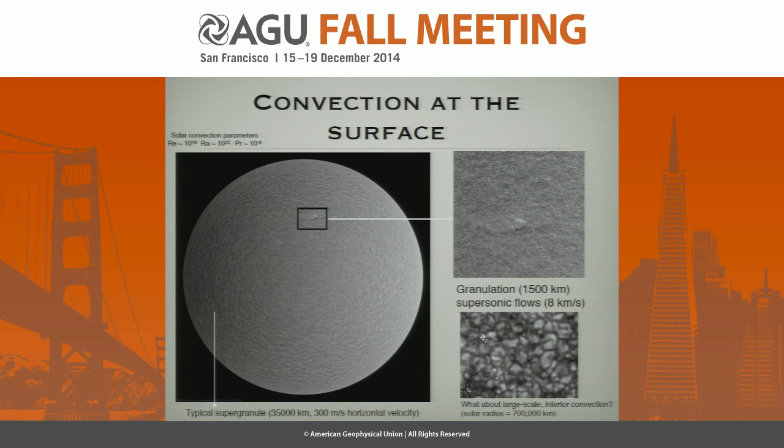If you look at the disk of the sun, you see granularity that strikes you, and that is supergranulation. Each of these features is about 35,000 kilometers. We think it's a scale of convection, although it's still an outstanding puzzle as to why this scale of fluid motion arises. The supergranules dot the surface uniformly, isotropically essentially, with about 300 meters per second horizontal velocity.